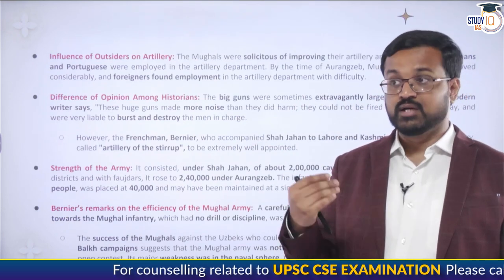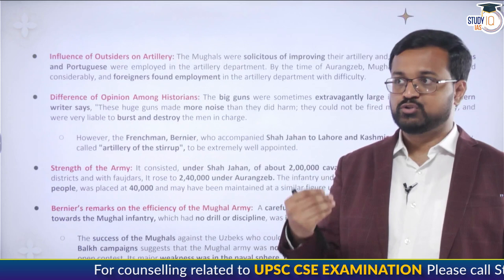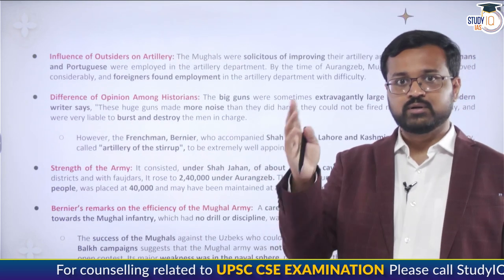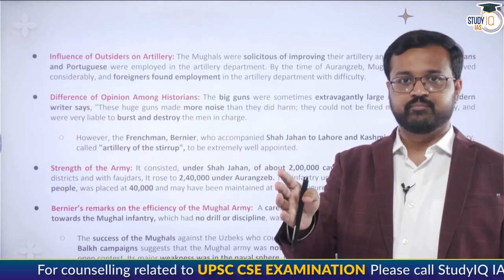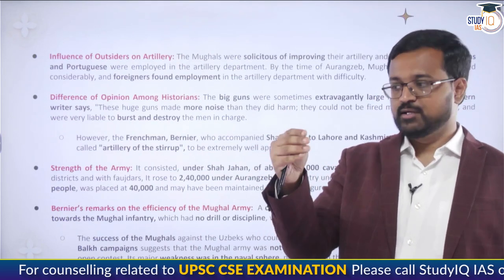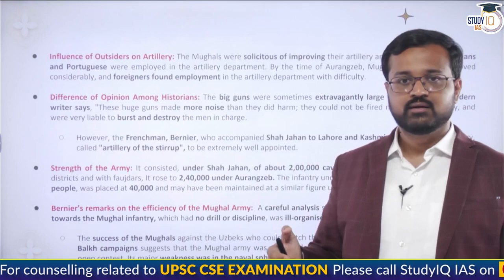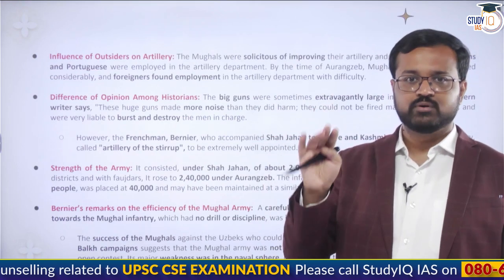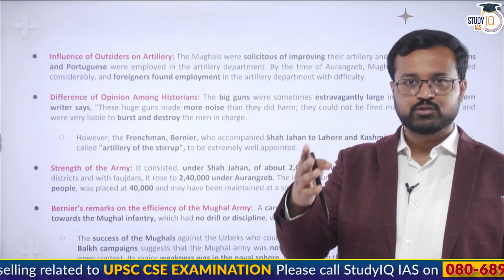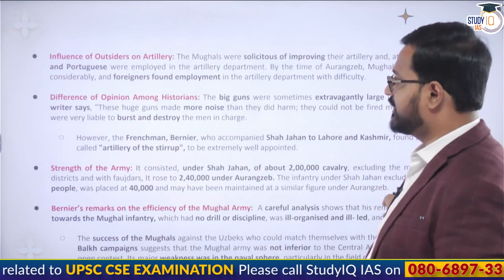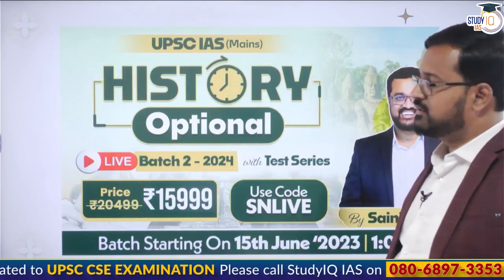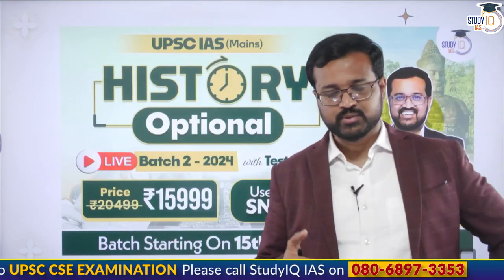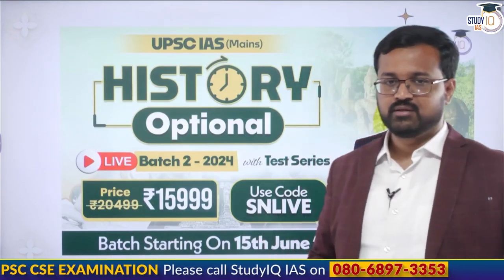When Akbar, Jahangir, Shah Jahan, or Aurangzeb personally led campaigns, the army performed well. But the moment a weak ruler came, the army would not follow orders due to lack of organizational capabilities. This ill-discipline was one reason Mughals could not permanently hold the areas they conquered — once they returned, the areas were lost.